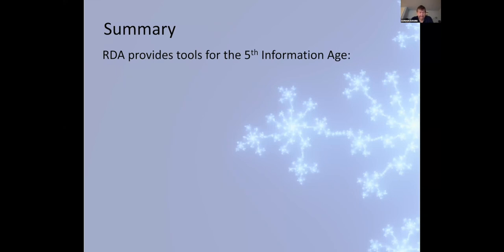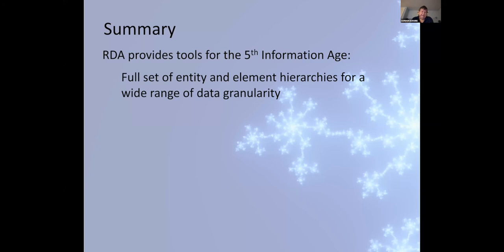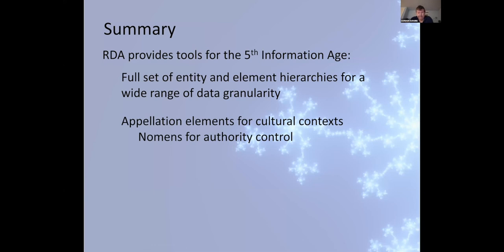So, in summary, RDA provides a range of tools for the fifth information age. There is a full set of entity and element hierarchies for a wide range of data granularity. There are appellation elements for cultural contexts. These are the kinds of gnomon that I've mentioned, including names, titles, access points, and identifiers. These are all clearly distinguished in RDA. There is the choice of using gnomons or gnomon strings, using gnomons for authority control. There is the self-referential model for data provenance using RDA to describe RDA.